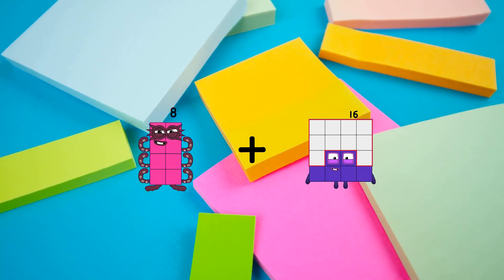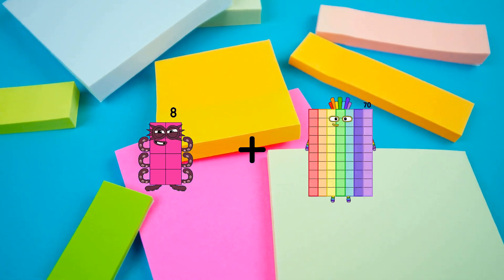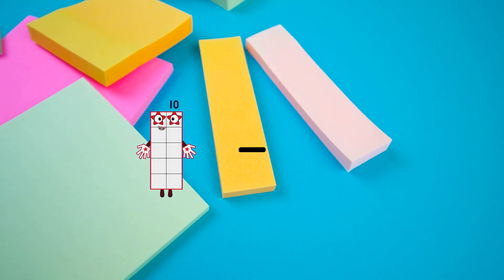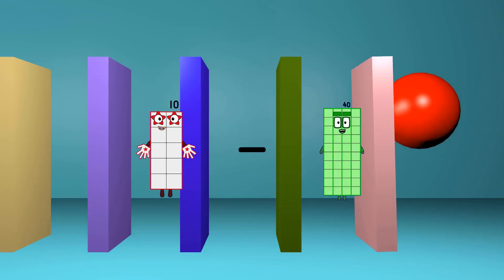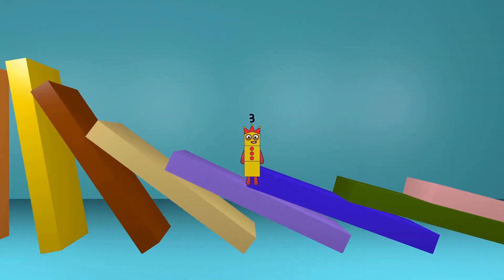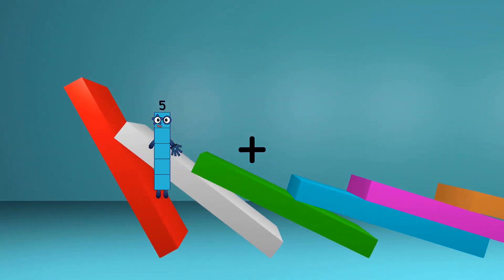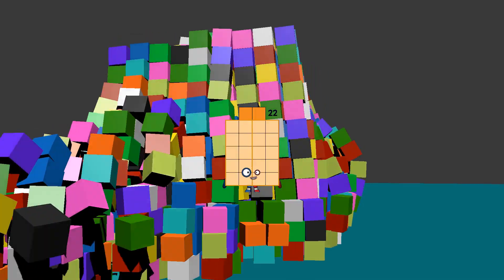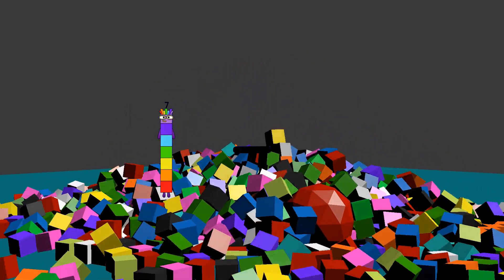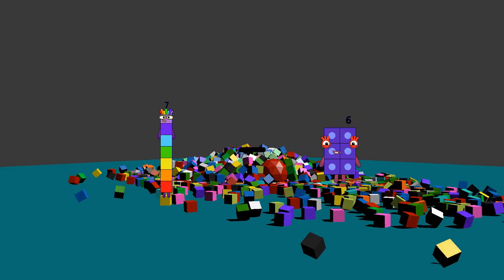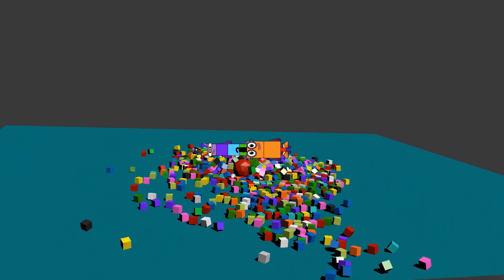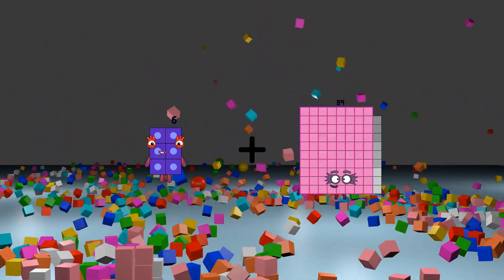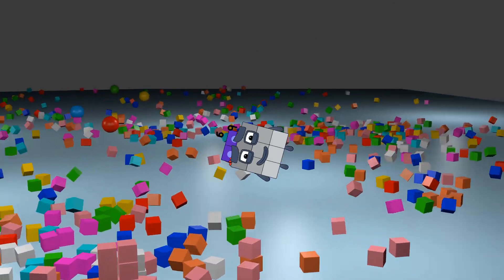8 plus 25 equals 33. 10 minus 7 equals 3, 5 plus 17 equals 22, 7 minus 2 equals 5, 6 plus 9 equals 15.